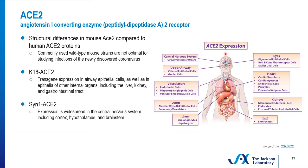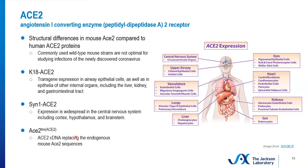SYN1-ACE2 is going to result in expression widespread throughout the central nervous system, including the cortex, hypothalamus, and brainstem. Whenever you see mouse ACE2 in lowercase and ACE2 in uppercase together, it means that the human ACE2 cDNA completely replaces the endogenous mouse ACE2 sequences. This can be useful for eliminating the confounding effect of the presence of ACE2 endogenously in the mouse.